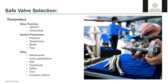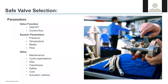A little bit about safe valve selection. Some of the parameters we look at when helping customers select a valve: first is valve function — is this going to be an on-off valve to start and stop flow, or are you looking to control flow? A ball valve is for on-off, and a needle valve is more of a control valve for regulating flow. System parameters include pressure, temperature, media type, and flow. We also consider maintenance, cycle expectations, valve size, cleanliness, safety, cost, and actuation methods — we can offer manual, pneumatic, and electric actuation.